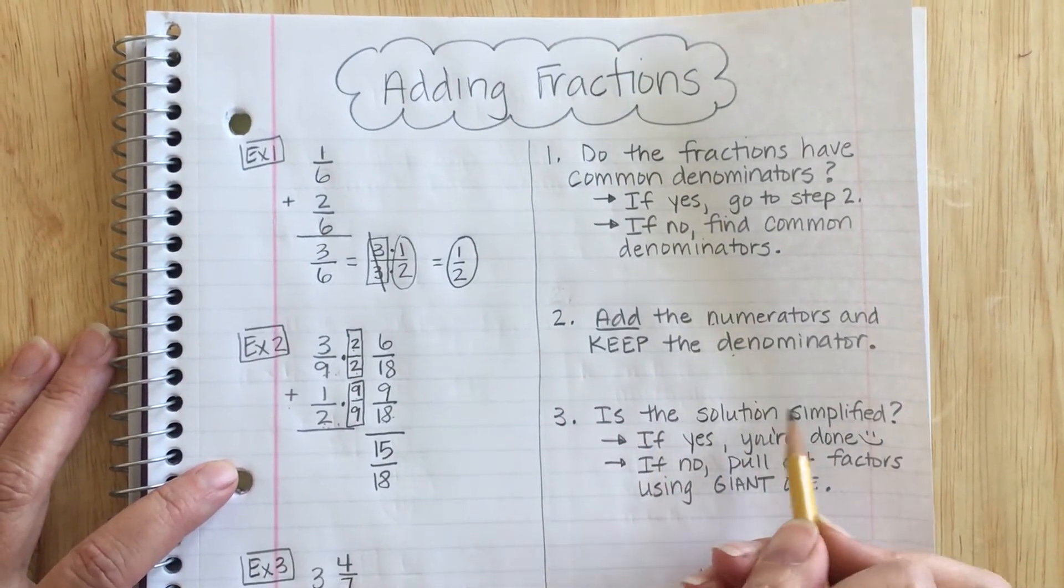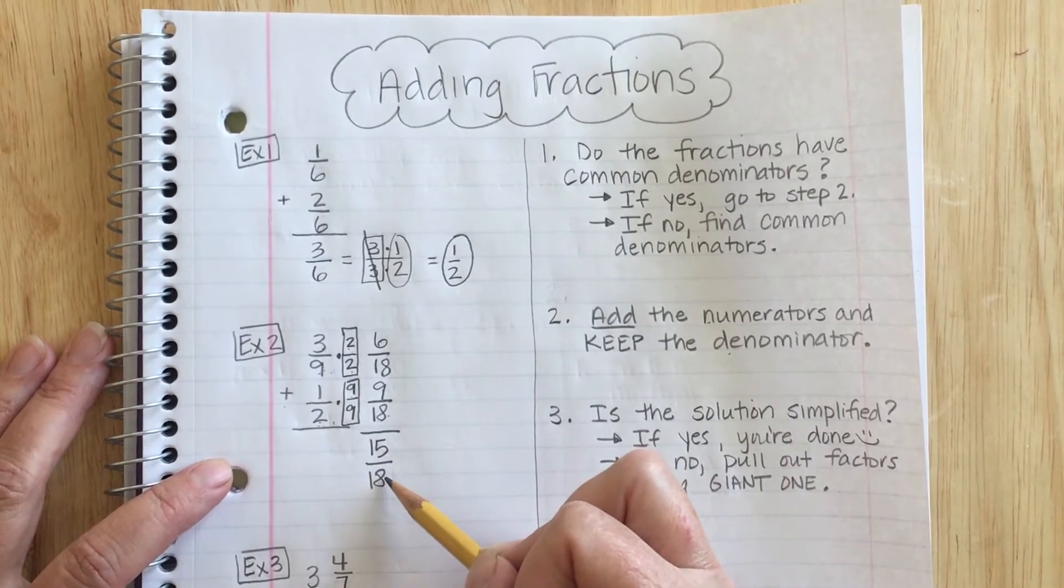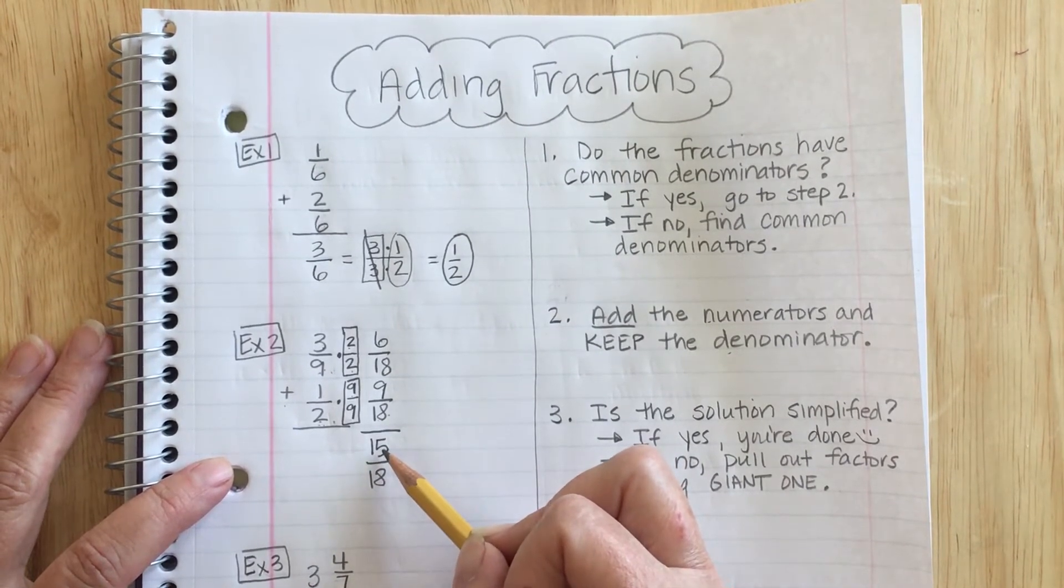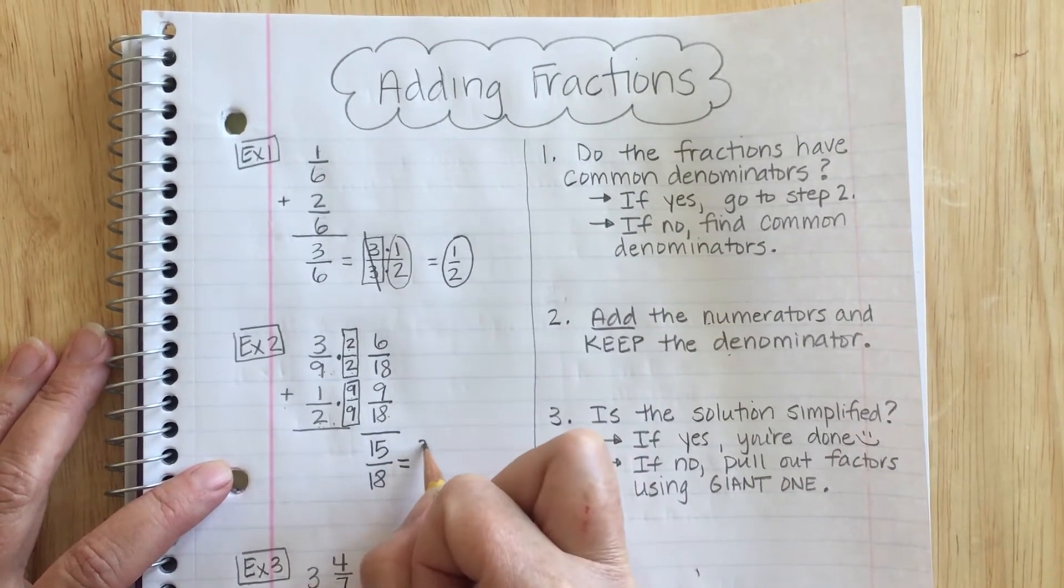Step 3. Is the solution simplified? I take a look at this and I see that there is a factor that's going to come out. I think about 15 and I know 15 is 3 times 5. So I'm going to write it as 3 times 5.